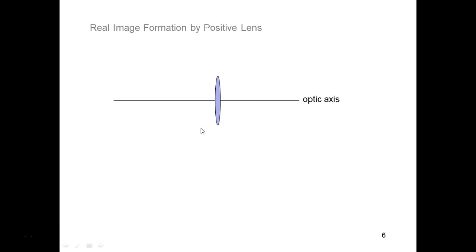Here is a positive lens. How do I know it's positive? Because it's thicker in the middle. We know that this lens has a focal length — it's in some surroundings, we'll assume air, and it has a refractive index. So it has a focal length. I'm going to note both of its focal points: the front focal point on the left and the back focal point on the right.